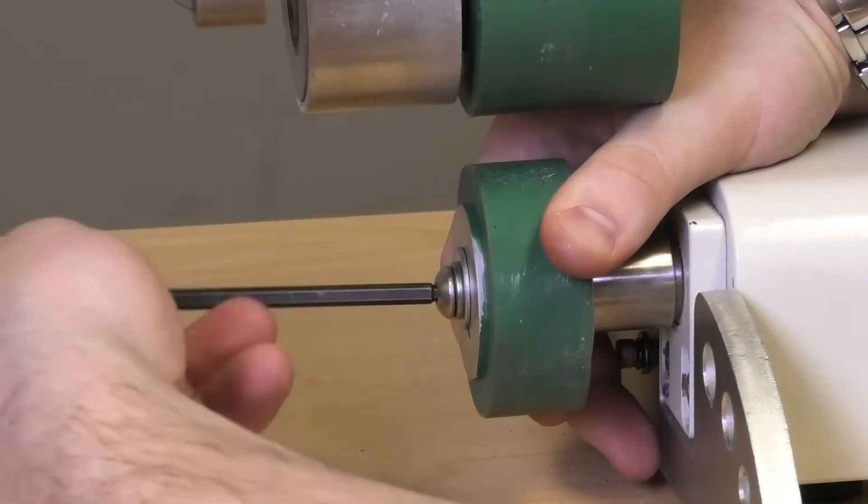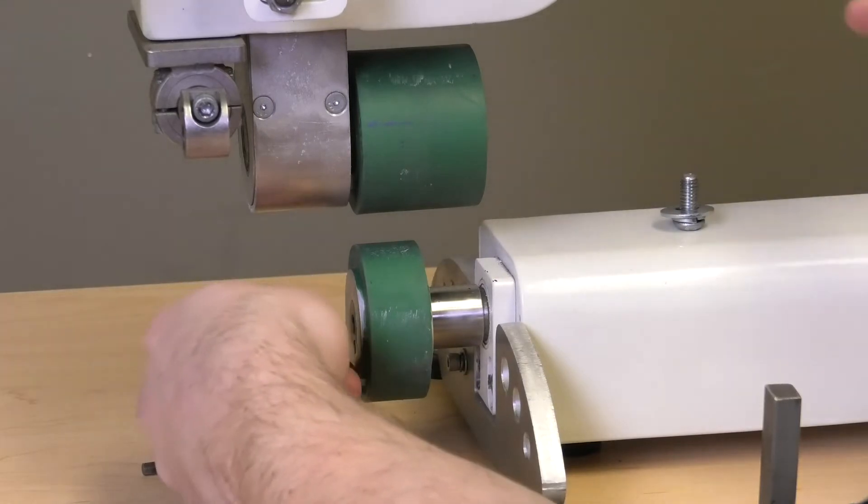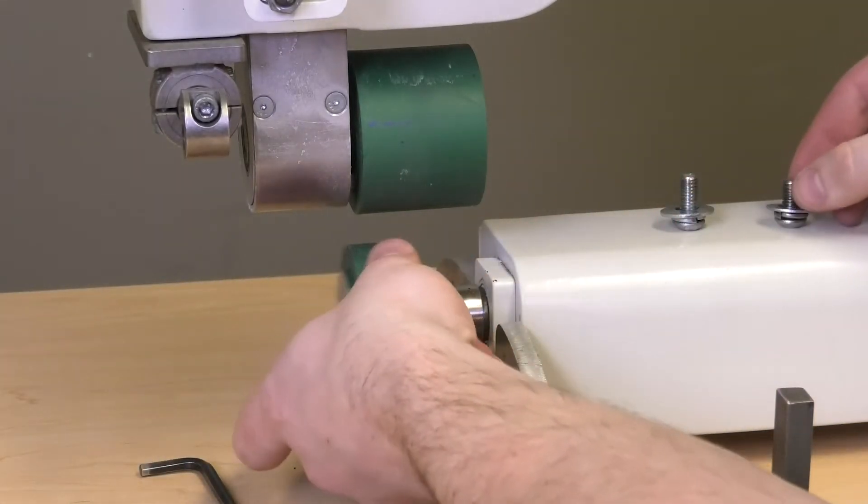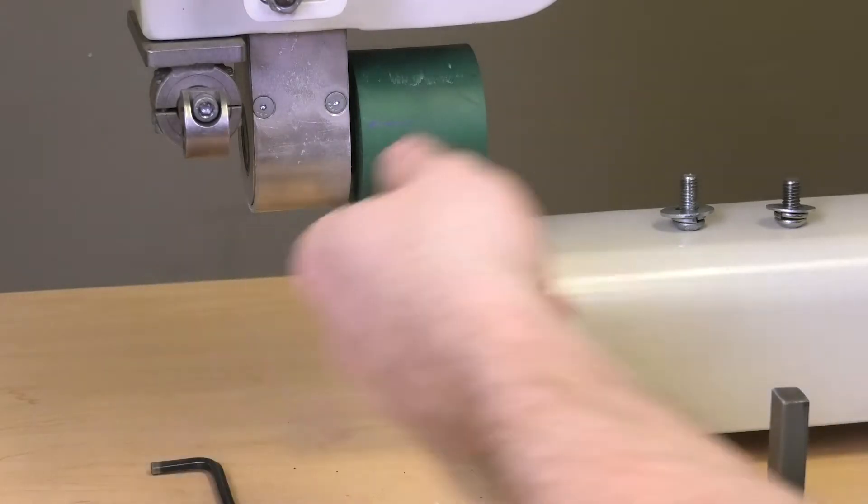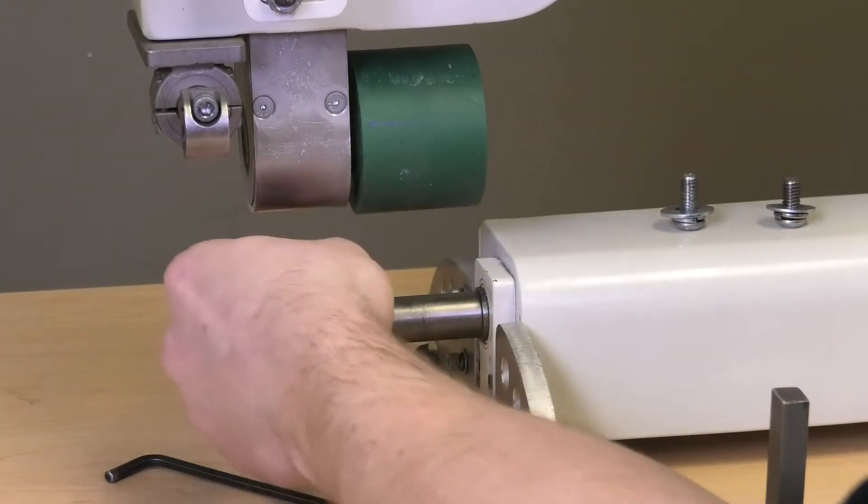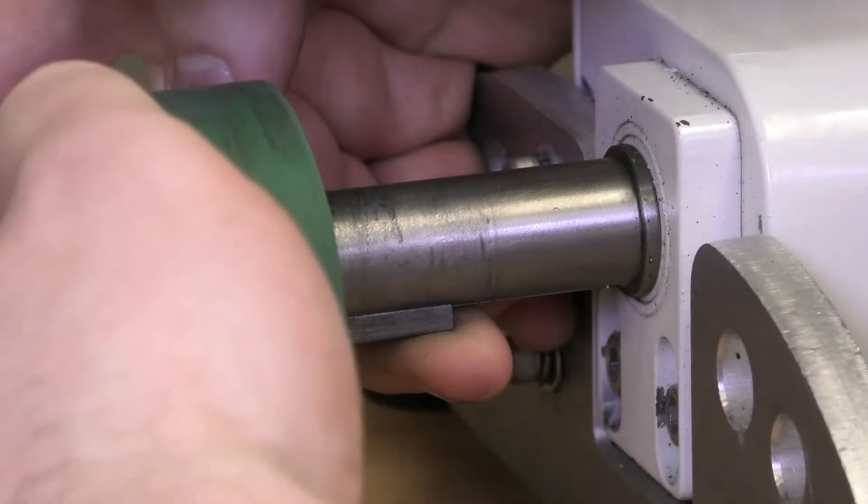Now we can take off our bottom wheel. Spin the bolt off, slide the wheel off. Make sure your keyway is in, and while holding it in, slide on your lower wheel.